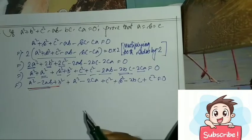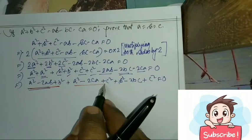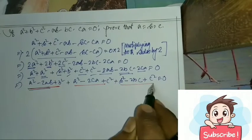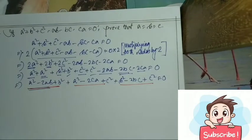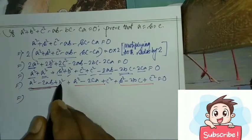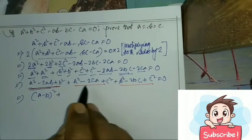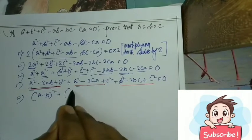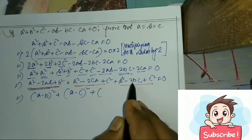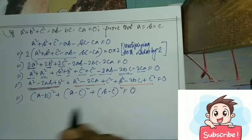From this, a² - 2ab + b² is (a - b)², a² - 2ca + c² is (a - c)², and b² - 2bc + c² is (b - c)². So we have (a - b)² + (a - c)² + (b - c)² = 0.